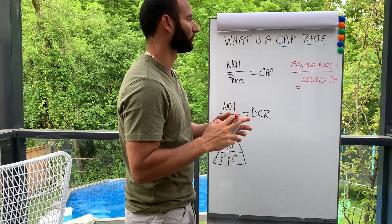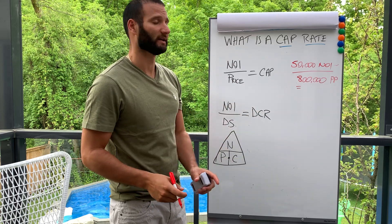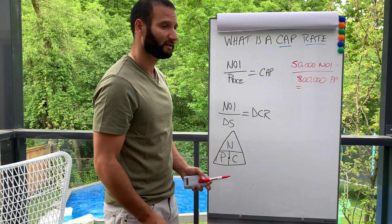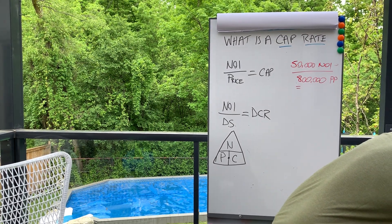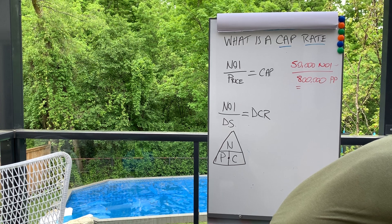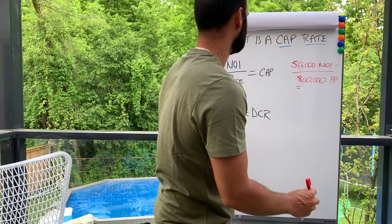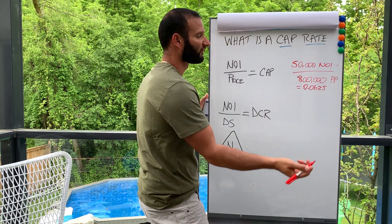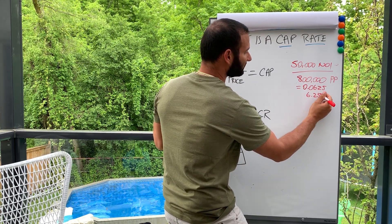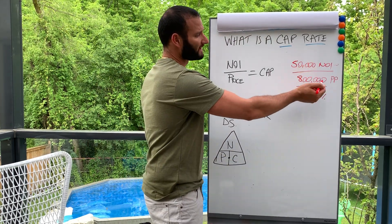Now let's have some fun. What if the purchase price was eight hundred thousand instead of one million? We take fifty thousand divided by eight hundred thousand, which equals 0.0625. Reflected as a percentage, that's six point two five percent.